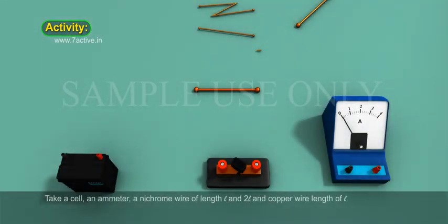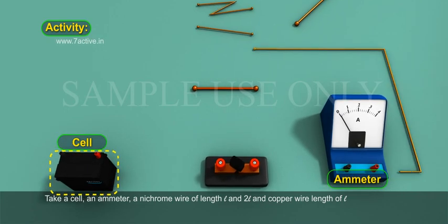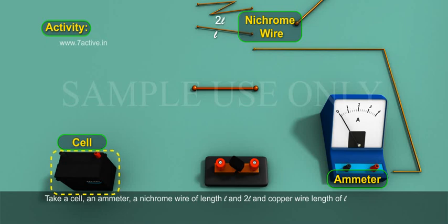Activity: Take a cell, an ammeter, a nichrome wire of length L and 2L, and copper wire of length L.